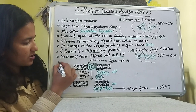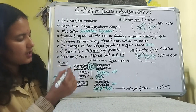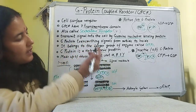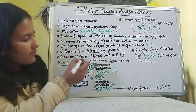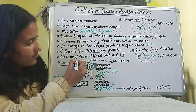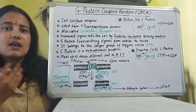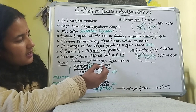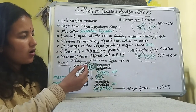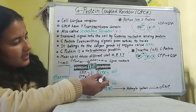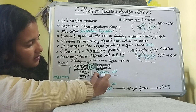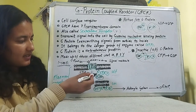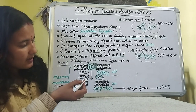Now let's discuss the mode of action. Here you can see the cell's plasma membrane, also called the cell membrane. The GPCR has seven transmembrane domains, crossing the membrane seven times. In the OFF state, when G-protein is inactive, GDP is bound and the alpha, beta, and gamma subunits remain combined and are present at the plasma membrane.